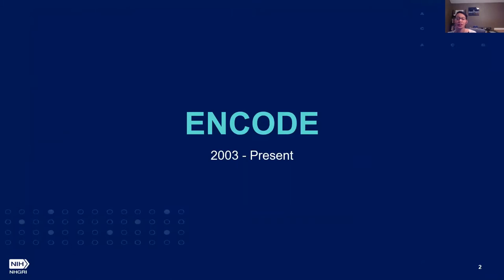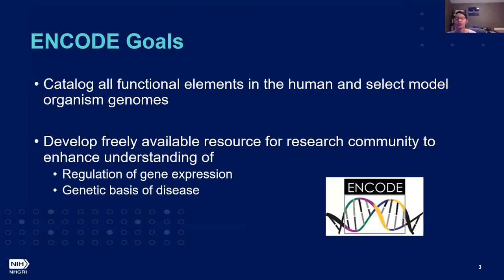This program has been in place for over the last 17 years. It was initiated after completion of the Human Genome Project in 2003. There are two overarching goals, the first of which is the cataloging of all of the functional elements in the human genome and the genome of model organisms — including mouse, worm, and fly.